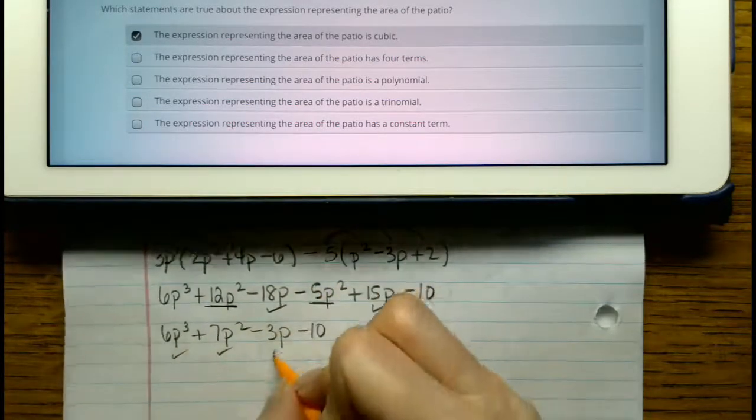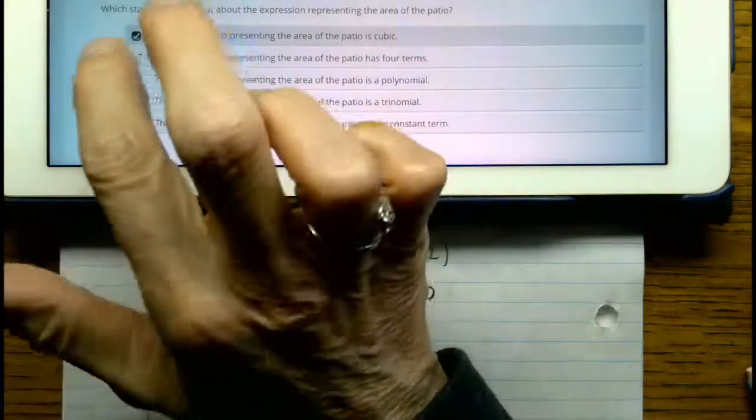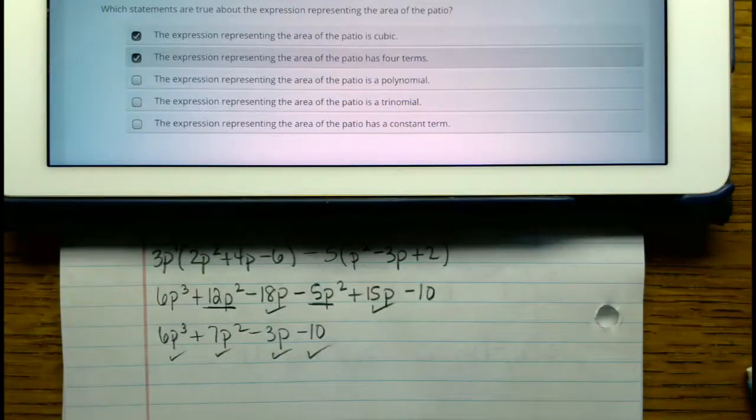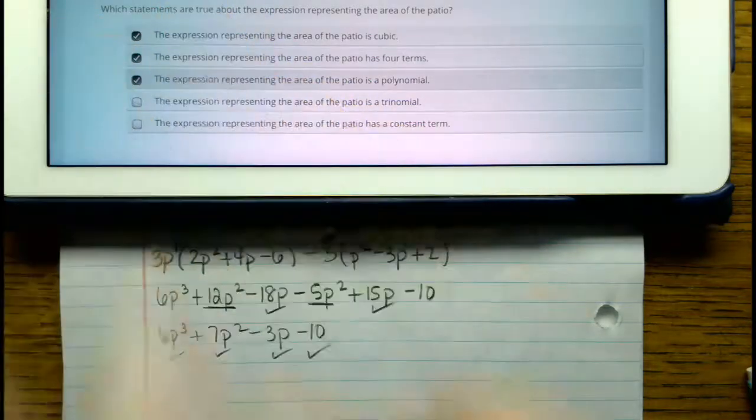One, two, three, four. Yes, that's true. The expression representing the area of the patio is a polynomial. Yes, that's true.